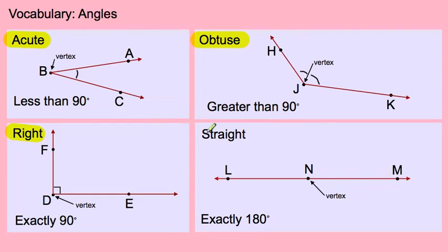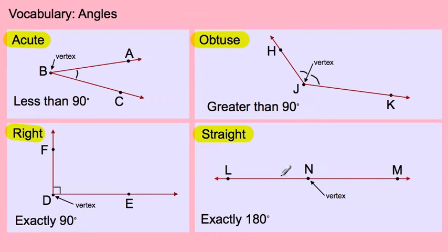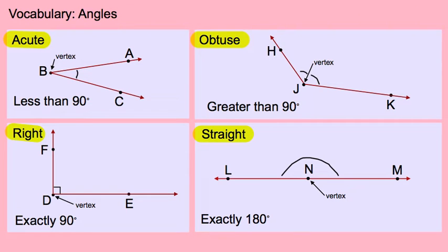The last one is called a straight angle. A straight angle is a straight line, but what it is is exactly a 180-degree angle. We're measuring from one end to the other, the vertex is right in the middle, and it goes out straight in one direction and straight in the other — that's why it's called a straight angle.